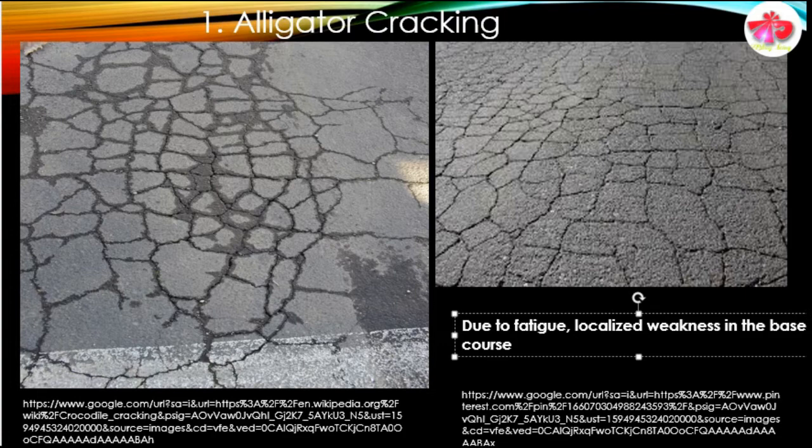Failure in the flexible pavement occurs due to failure in the subgrade, or due to failure in the subbase or base course, or due to failure in the wearing course. These are the general layers in which failures of the flexible pavement occur, and these failures result in typical failure patterns.